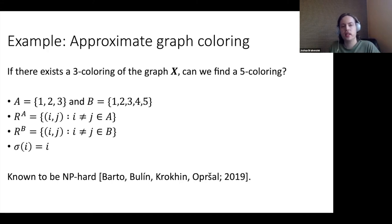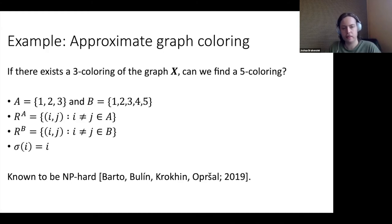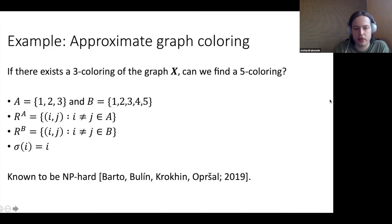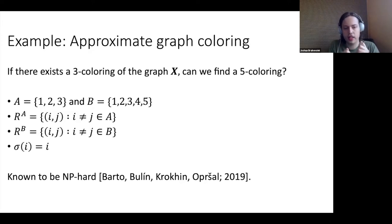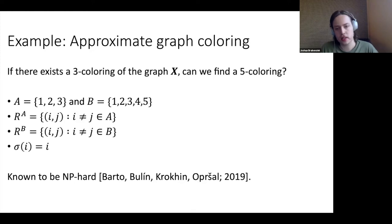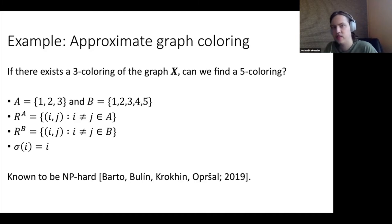Let's start with the classic approximate graph coloring example. Given a graph X, assume there exists a 3-coloring — can we find a 5-coloring in polynomial time? The domain of 3-coloring is {1,2,3} and of 5-coloring is {1,...,5}. The relations are pairs (i,j) where i ≠ j on each domain. Our inclusion sigma is the identity map since A is a subset of B — any 3-coloring is also a 5-coloring. Although simple to state, this is very non-trivial to analyze; it was only because of the development of Promise CSPs that we learned this is NP-hard, as of last year.